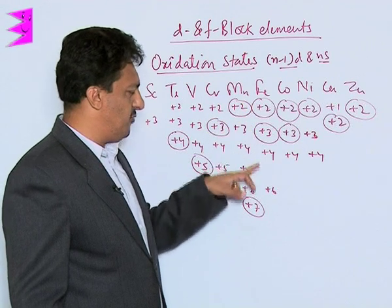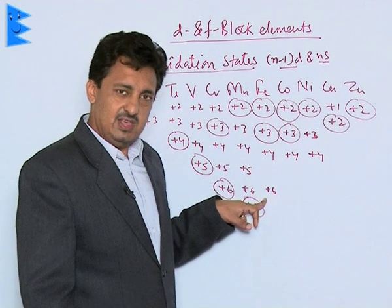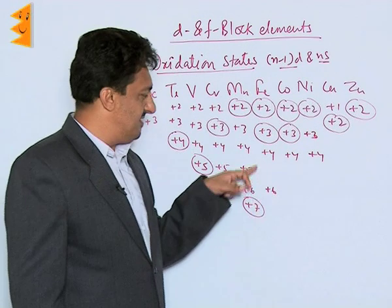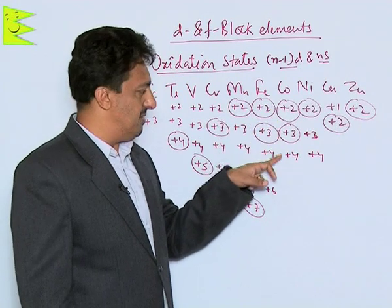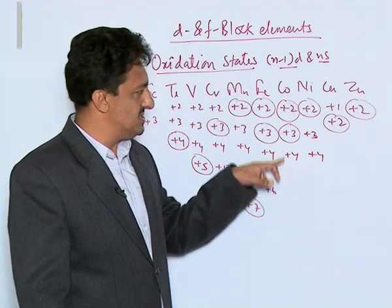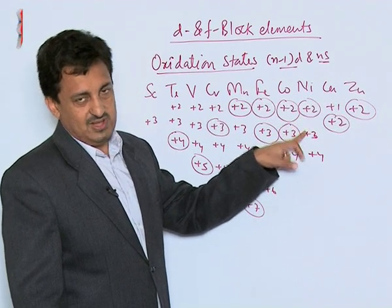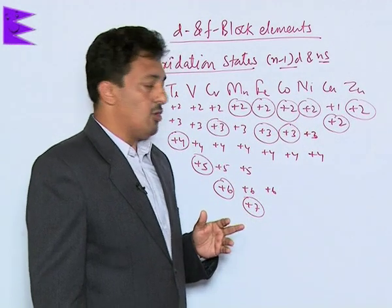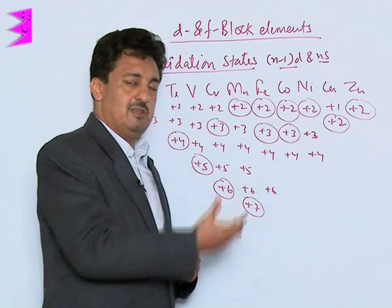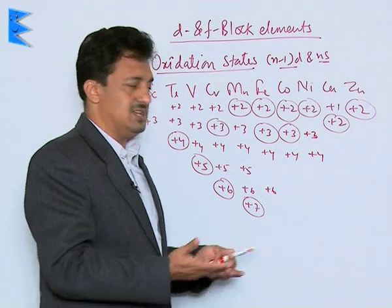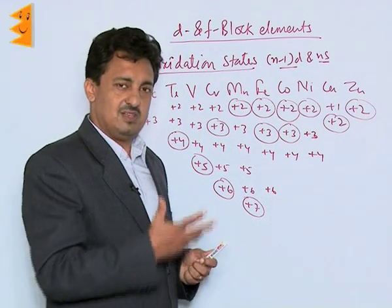Iron shows +2, +3, +4, and +6, but +4 and +6 are very rare — we can hardly find any one or two compounds in which it exists in those states. Cobalt shows +2 and +3, while +4 is not a very common oxidation state. Nickel shows +2, +3, and +4, but is most stable in +2. Copper shows both cuprous (+1) and cupric (+2), but in aqueous medium it is more stable in +2. Zinc, being a non-transition element, only shows +2 because it requires a completely filled d¹⁰ configuration.